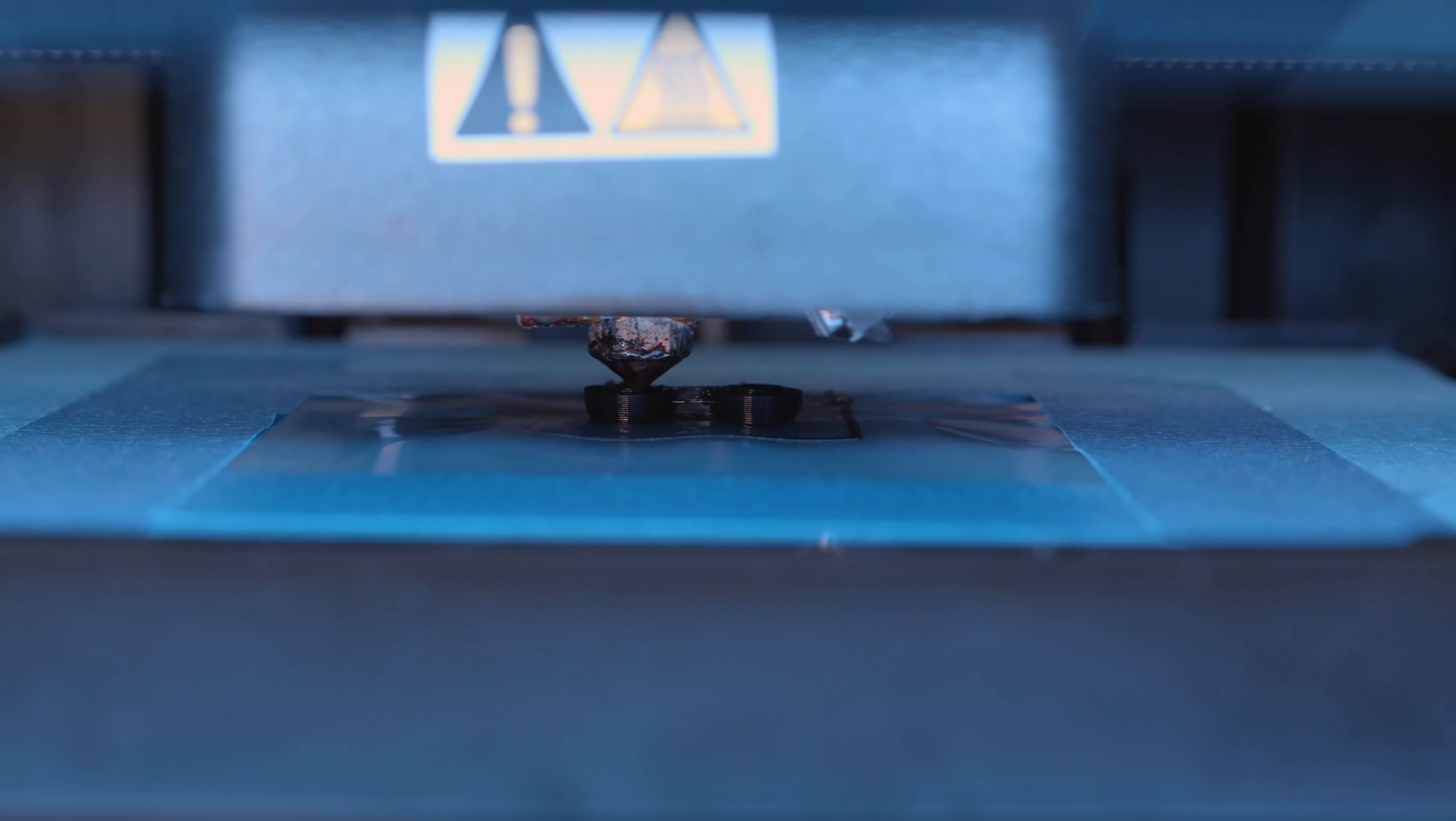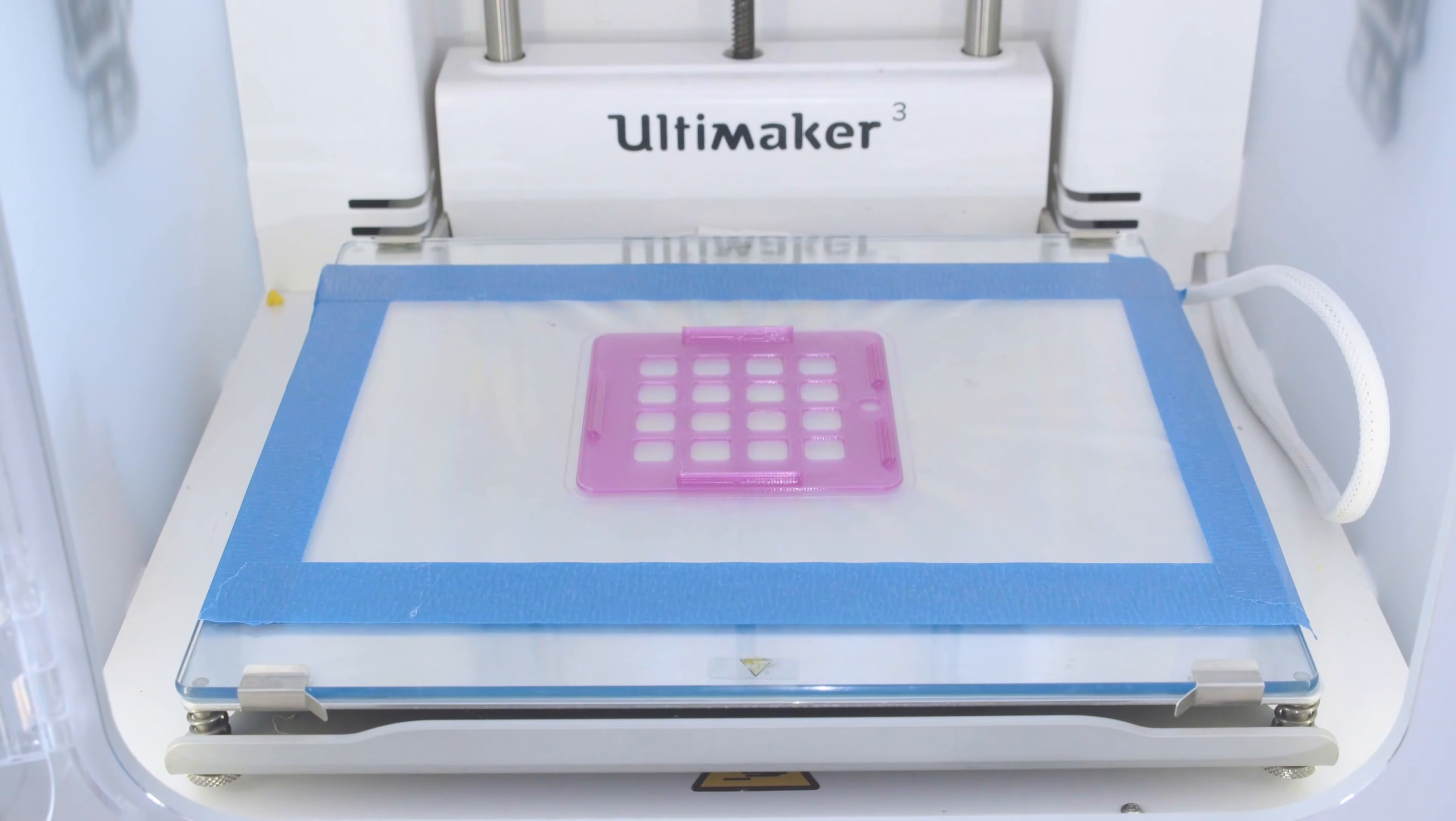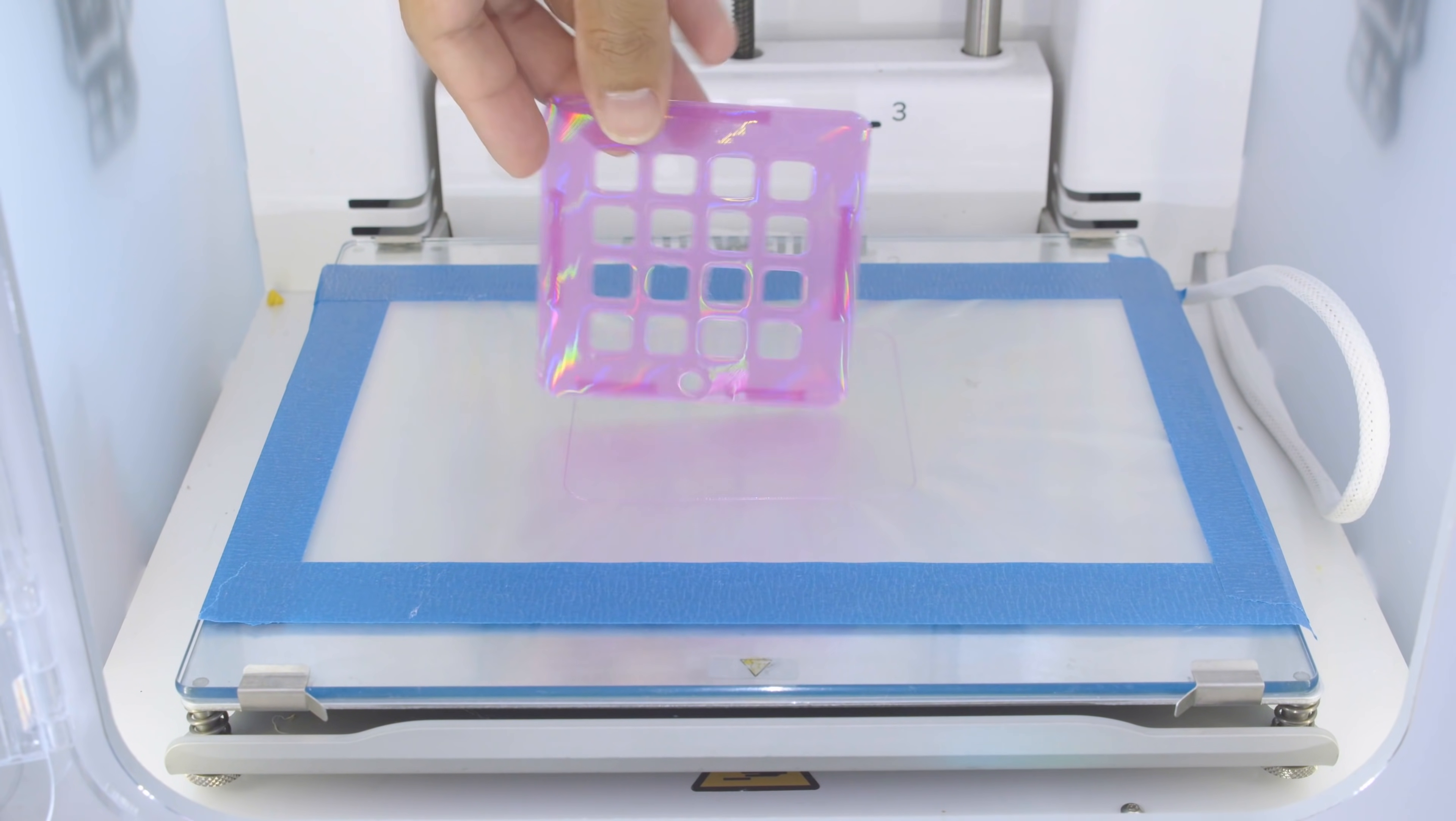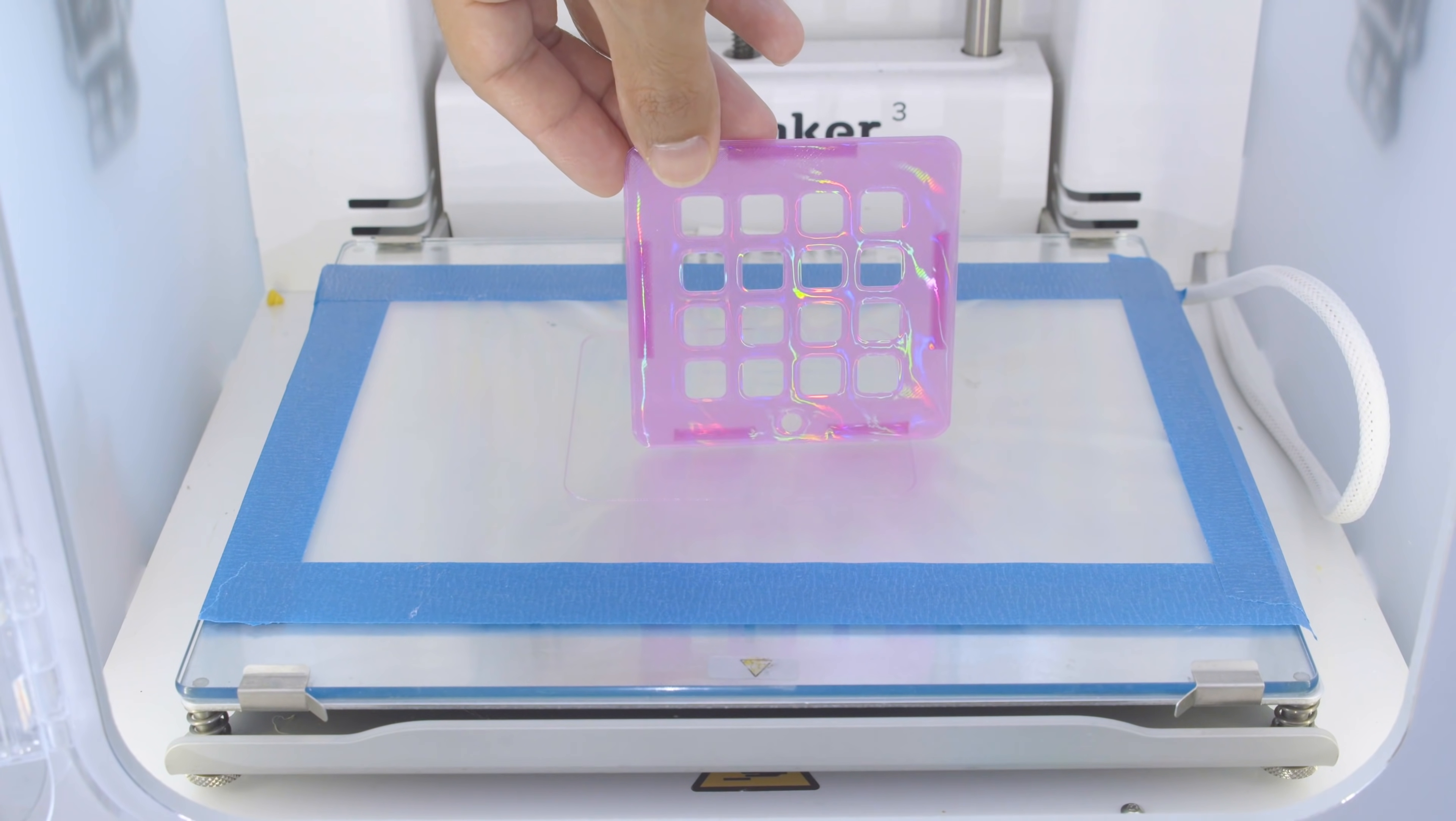NinjaFlex filament requires bed leveling to adhere to the sheets. You'll need to be cautious if the nozzle is too close, the film will fuse to the part. Once the parts are cooled down, they're easily removed.